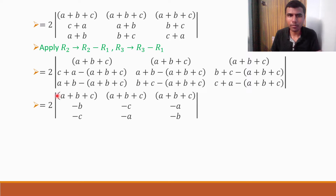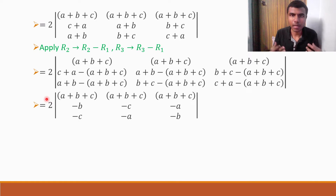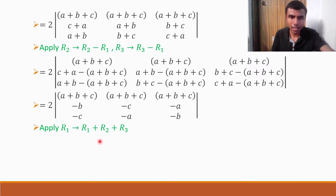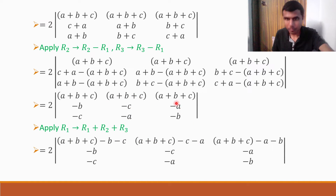The problem is that in the first row I still have three terms — A plus B plus C — but I only want a single term. So I'm going to apply R1 implies R1 plus R2 plus R3 again. If I apply this, in place of the first element I'll get A plus B plus C plus minus B plus minus C, which is A plus B plus C minus B minus C. Similarly, A plus B plus C minus C minus A, and A plus B plus C minus A minus B.